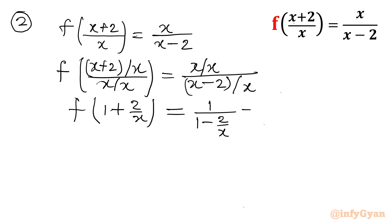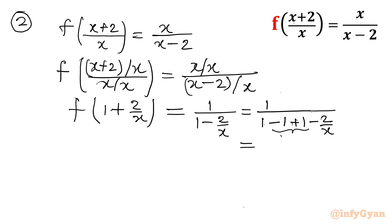Now without doing substitution I can write 1 over 1 minus 1 plus 1. I added 1 and subtracted 1 inside the denominator: 1 minus 2 over x becomes 1 plus 2 over x in the denominator with a minus sign taken common. So it becomes 1 over 2 minus 1 plus 2 over x. Now replace 1 plus 2 over x with any variable you want.